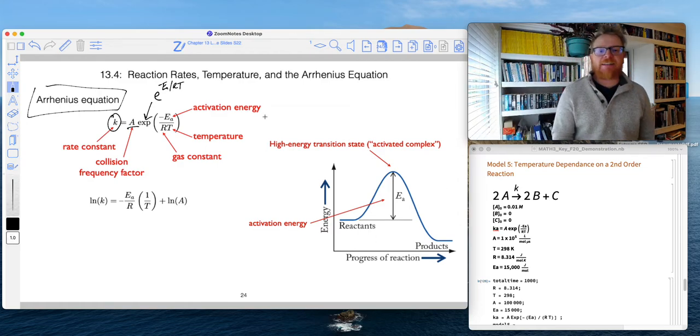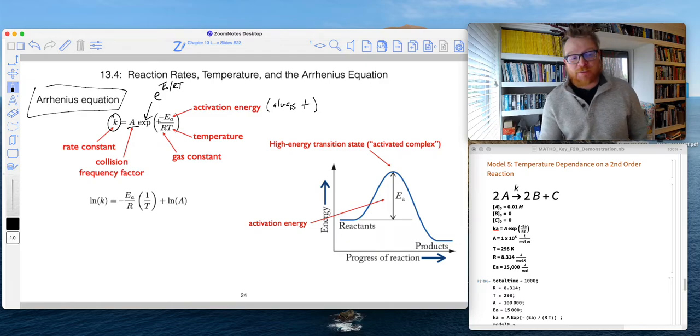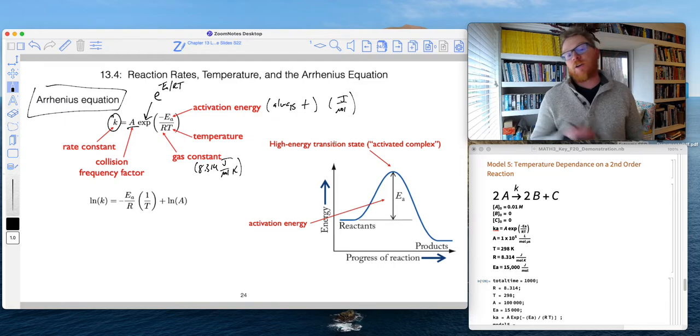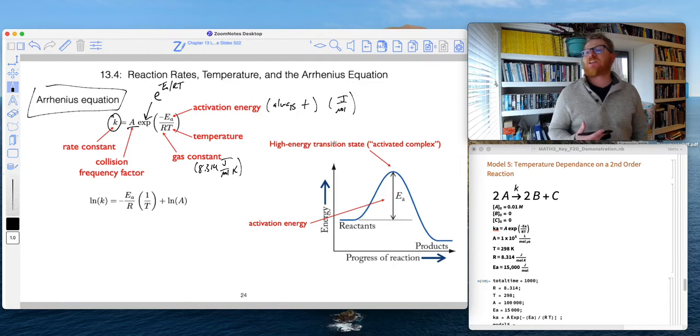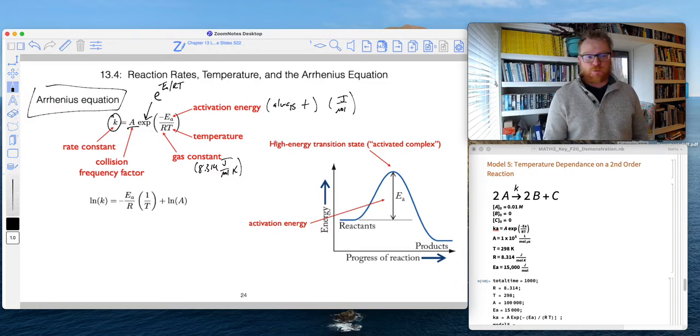So EA is our activation energy. Activation energies are always positive, even though there's a negative sign in the equation. R, that's our gas constant. And that's the 8.314 joule per mole per K flavor. So that means our activation energy is in joules per mole, but you'll often see it given as kilojoules per mole. So you have to do a little bit of unit conversion to get both of them in joules per mole. And of course, temperature in Kelvin.